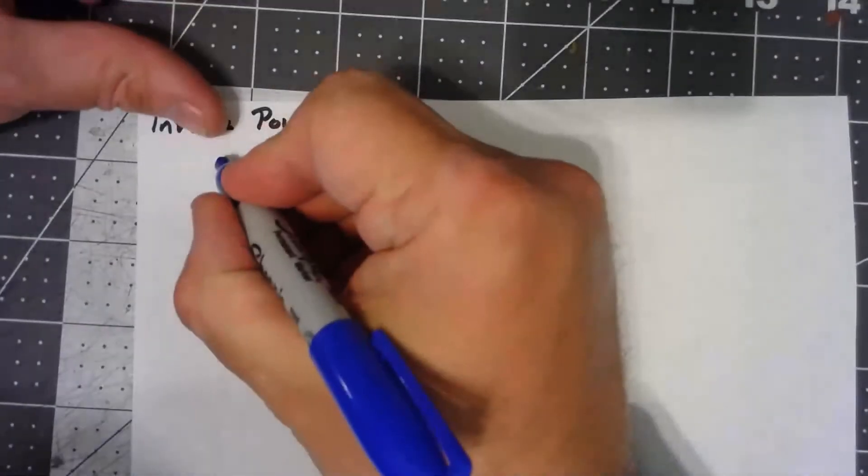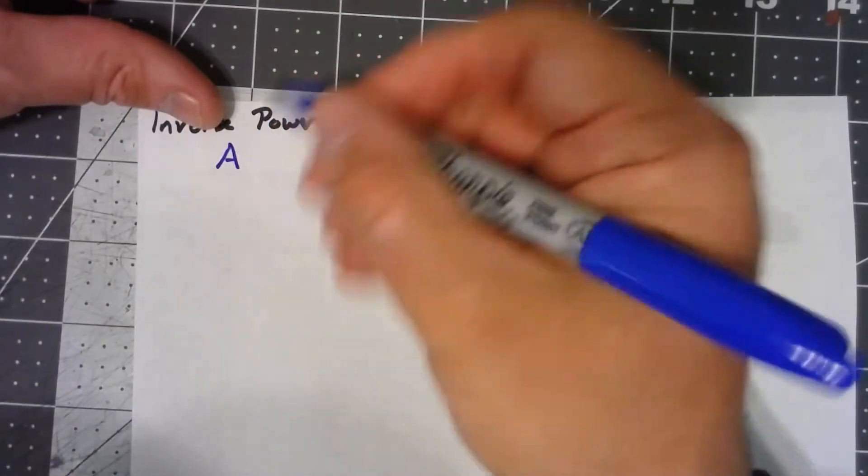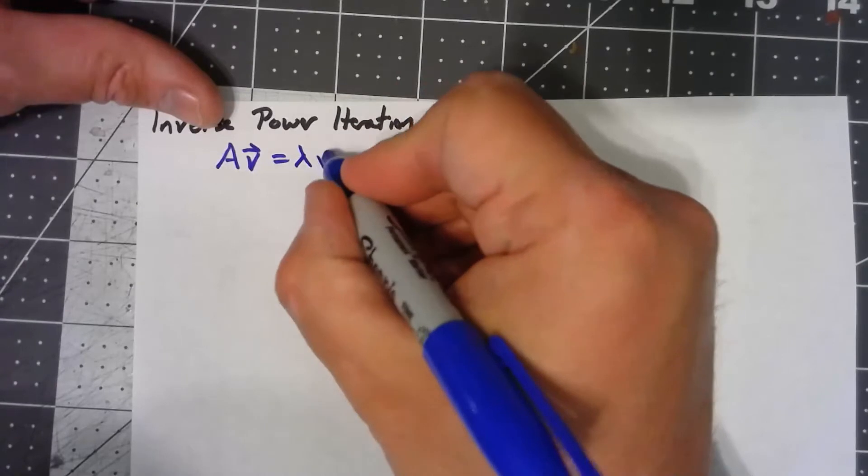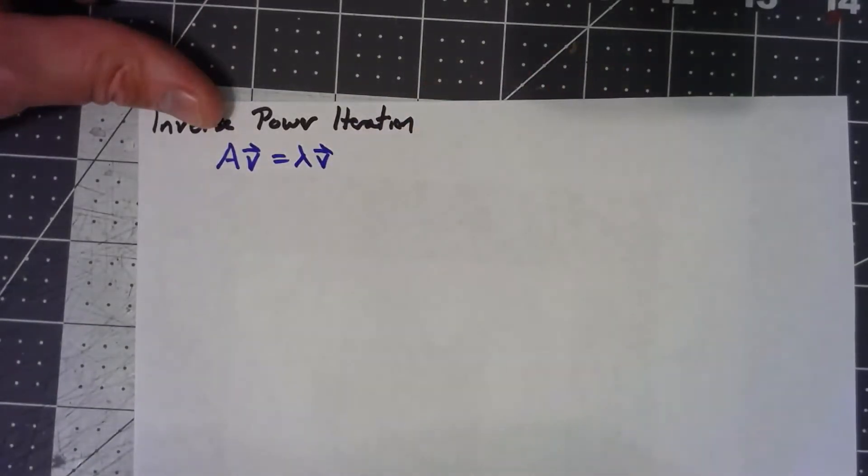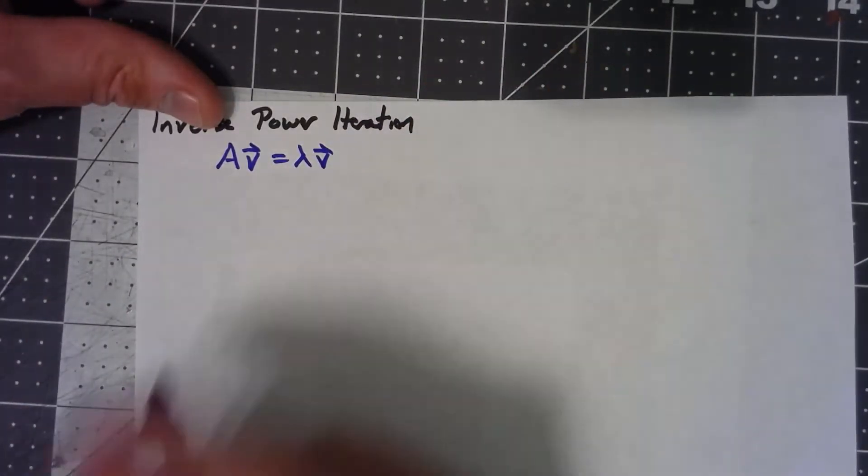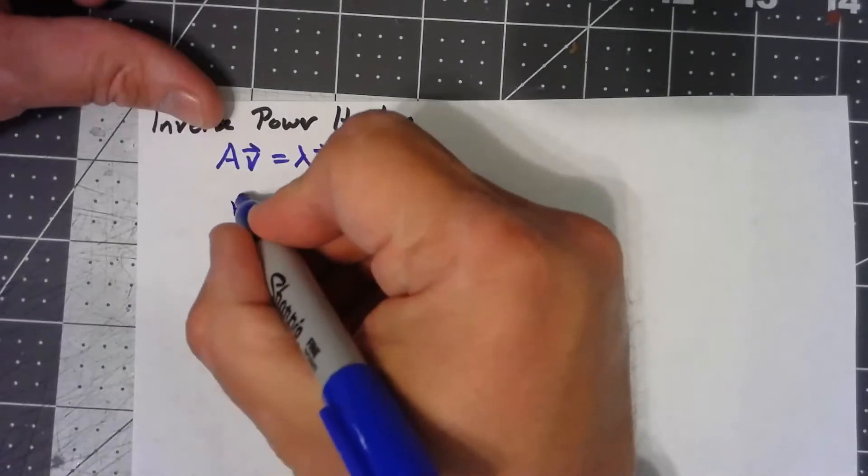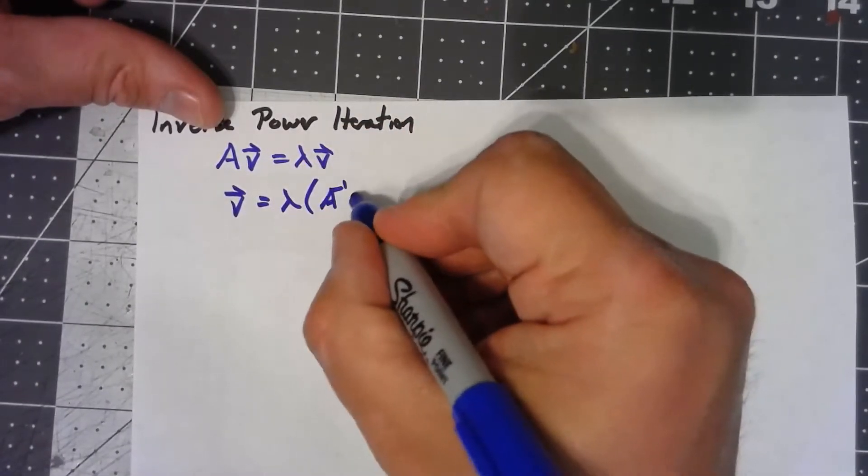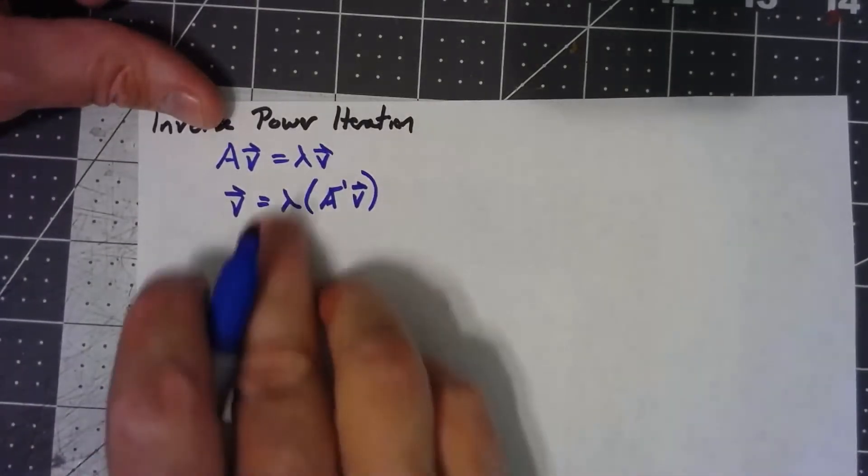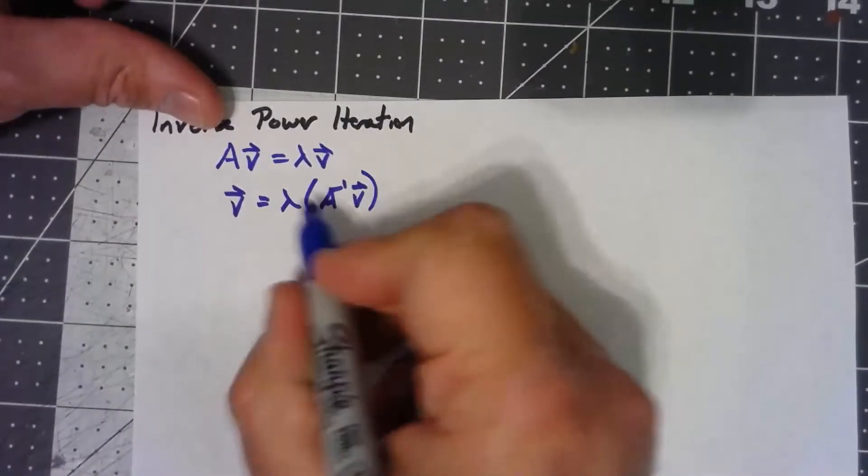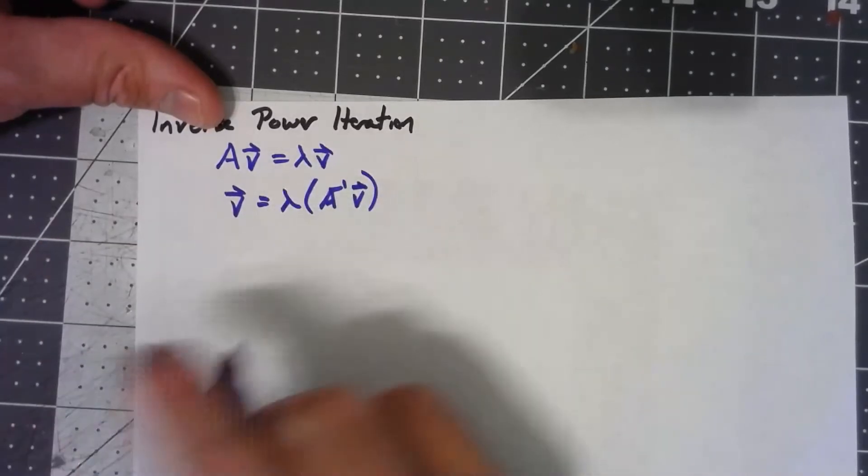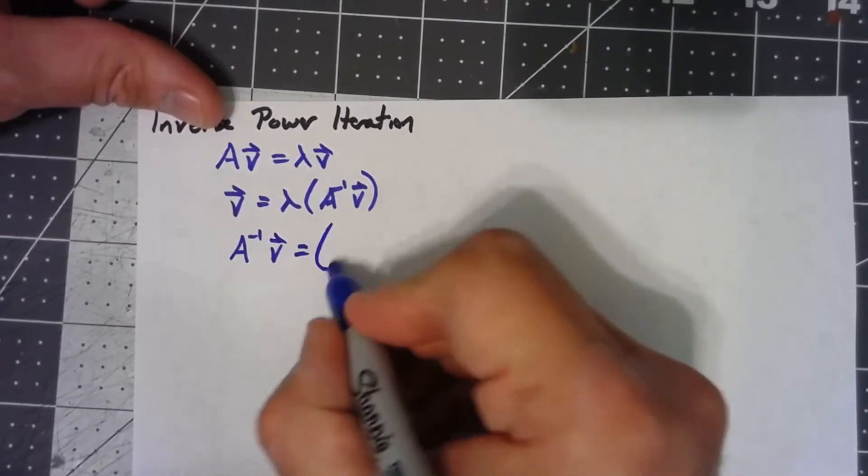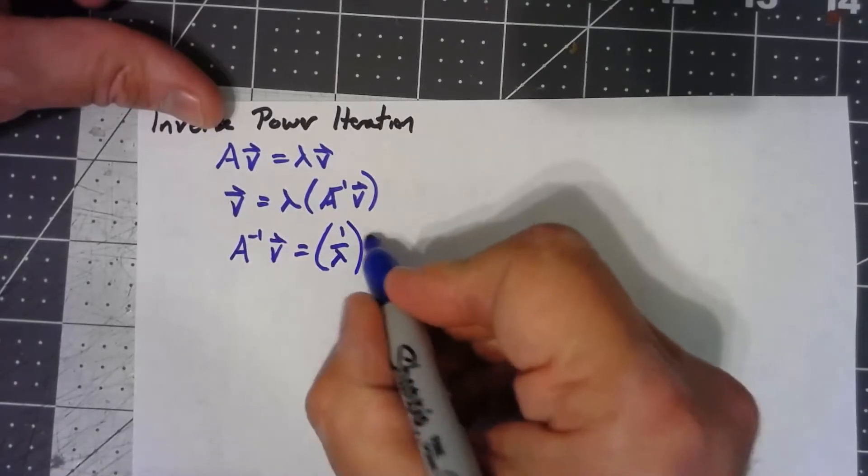It boils down to this: we know the whole idea of an eigenvalue and eigenvector is that A times v is equal to lambda times v. Let's multiply both sides by A inverse so v is equal to lambda times A inverse v, and then by multiplying by 1 over lambda, assuming lambda is not 0, we get that A inverse times v is 1 over lambda times v.